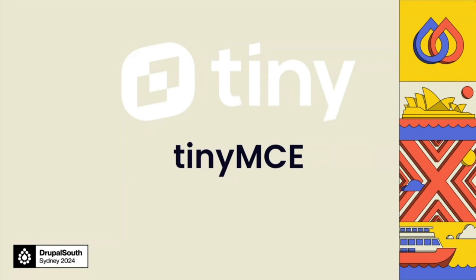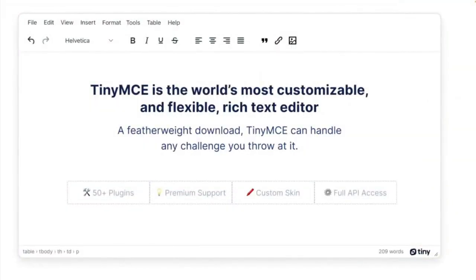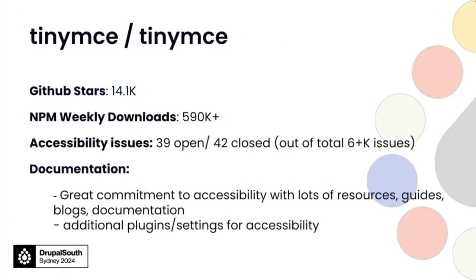The big one is TinyMCE, used by WordPress, Shopify, and Atlassian — very popular. It's very flexible with quite a few accessibility issues, but they're being addressed because of their high-profile clients. They have accessibility documentation, extra plugins for usability and accessibility, extra settings, guidelines, and keyboard shortcuts. However, TinyMCE is also not a free rich text editor.